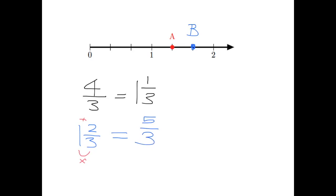And you should see one, two, three, four, five — that makes perfect sense in terms of what we can see on the number line.